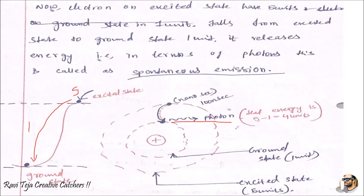When an electron in the excited state falls back to the ground state, it releases energy in the form of a photon. So the electron moving from excited state to ground state loses some energy, and that energy is released in the form of a photon — some sort of light. That laser light concept is called spontaneous emission: the falling of an electron from the excited state to the ground state due to instability, releasing energy in the form of photon or light — that is the laser light coming out of the laser unit.